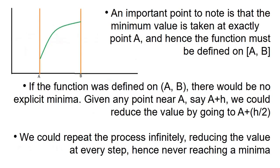Now an important point to note is that the minimum value is taken exactly at point a, and the function must be defined on closed interval [a, b]. If it was defined on an open interval (a, b), then we wouldn't really have a point that was the minima. If we talk about a point very close to a, say a+h where h is a very small positive value, we could reduce the value by going to a+(h/2), and as such we're reducing the value by moving within the given interval. We'd never have a minima because we could keep repeating the process and never really reach a value at which we could stop.